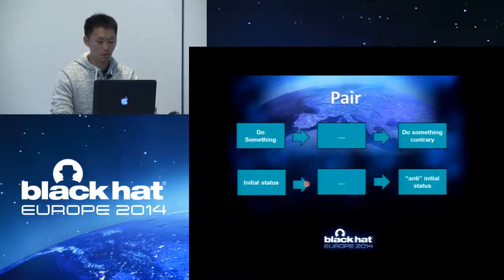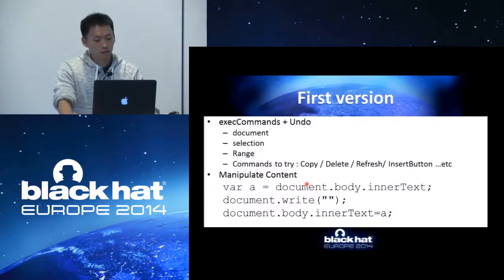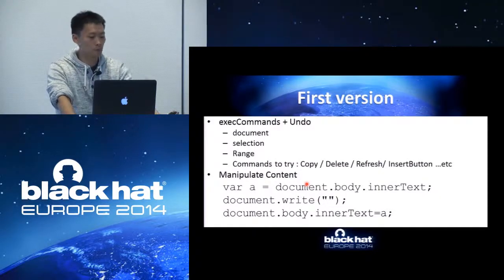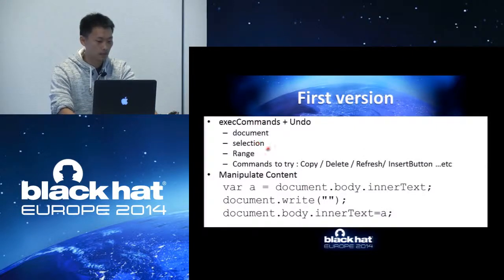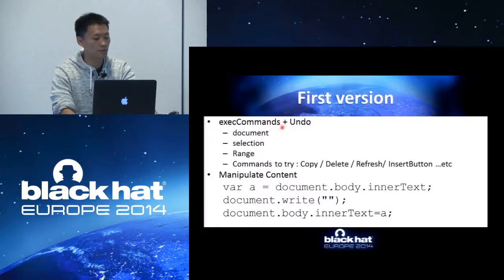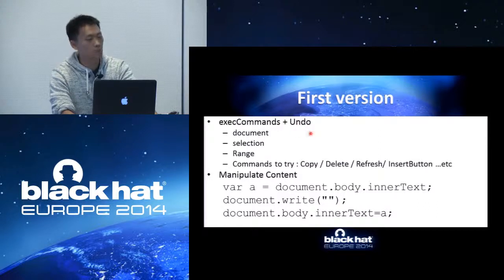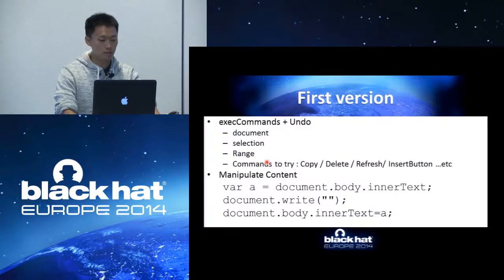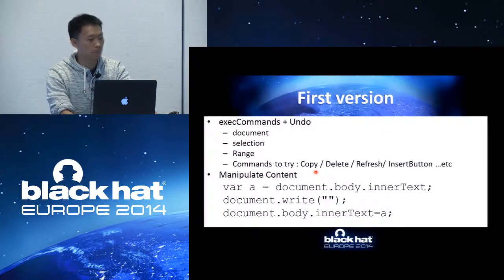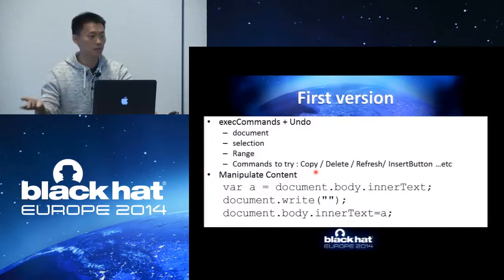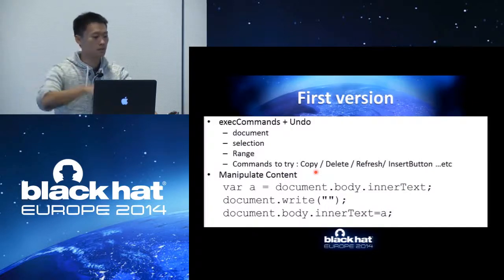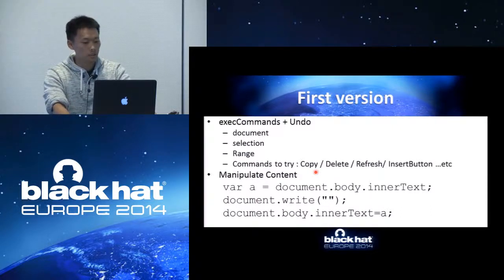Once we had this idea, we started building our own fuzzer. The first version uses three objects that can execute commands in IE: document, selection, and range objects. We can execute various commands on these objects, then execute an undo command. There are many interesting command combinations to try — like copy then undo, delete then undo, refresh, insert a button then undo. We very effectively found something through this approach.